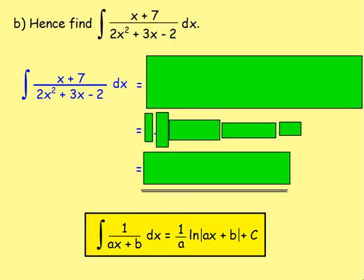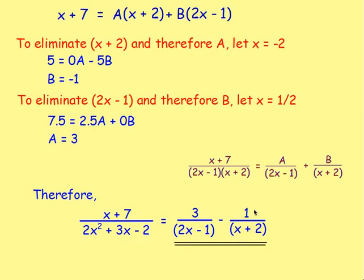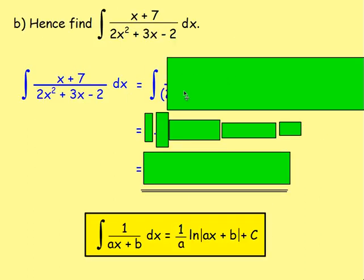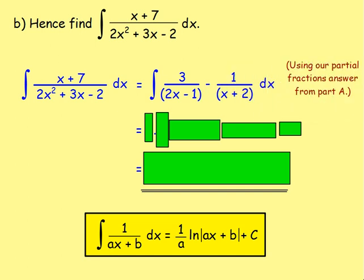Part b: we want to integrate our part a result. To integrate (x + 7)/(2x² + 3x − 2), we replace it with the partial fractions form. So we are integrating 3/(2x − 1) − 1/(x + 2).